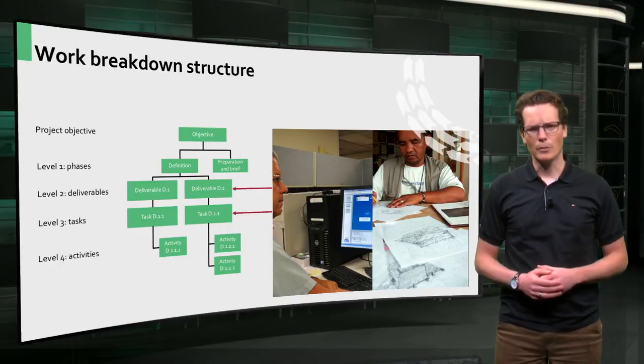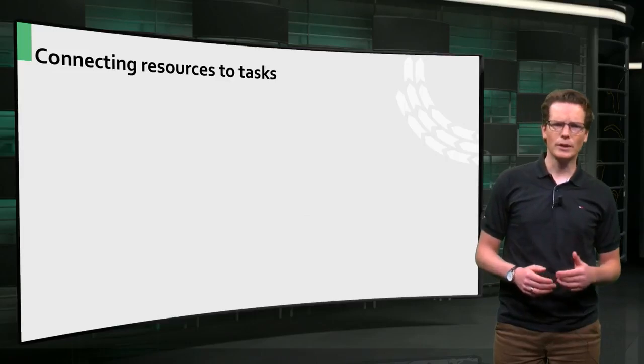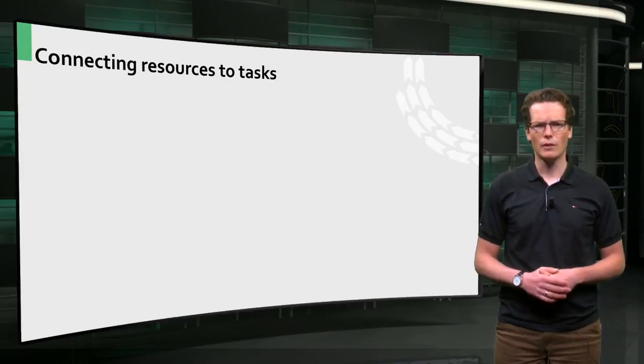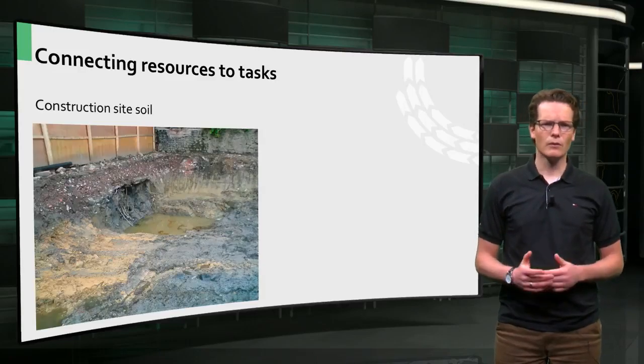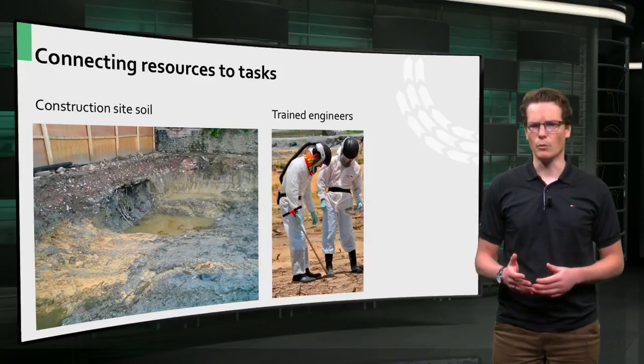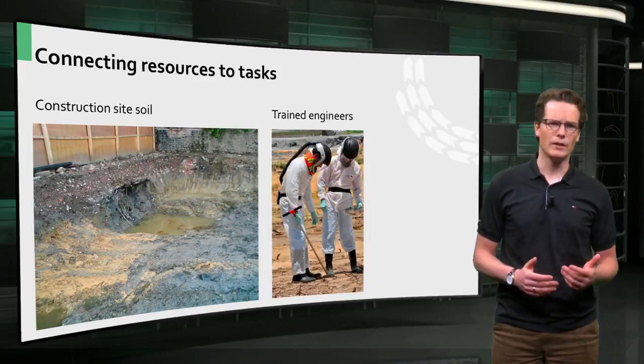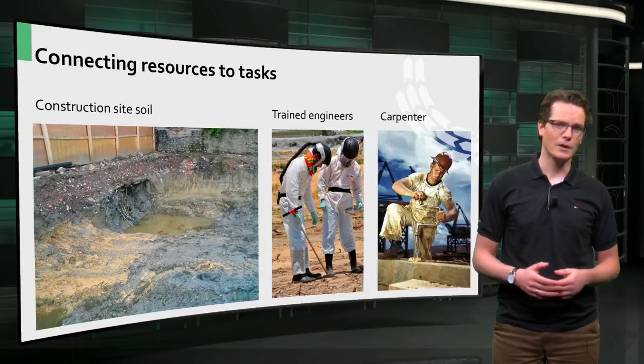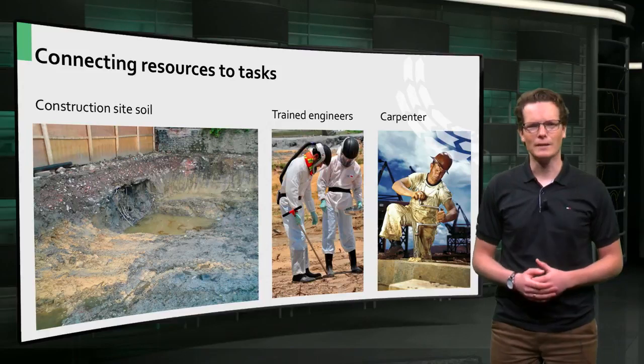Let me give you another example. To assign the right resources to particular tasks, you should ask yourself, who would you ask to investigate the level of soil contamination on a site? Would you go for option 1, the people who are trained engineers in the field of soil contamination, or option 2, a carpenter? I think you get it.